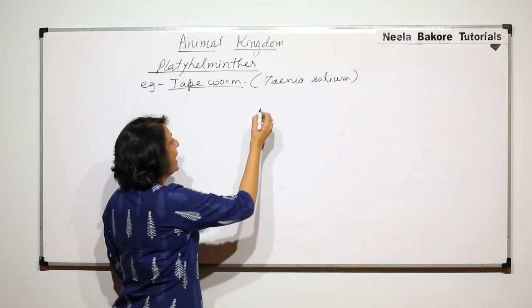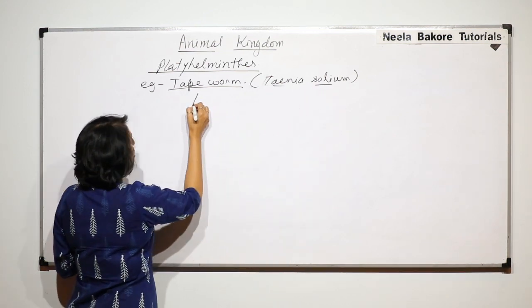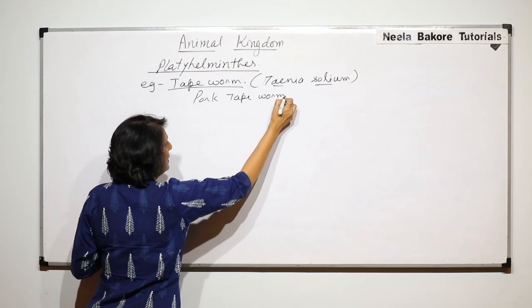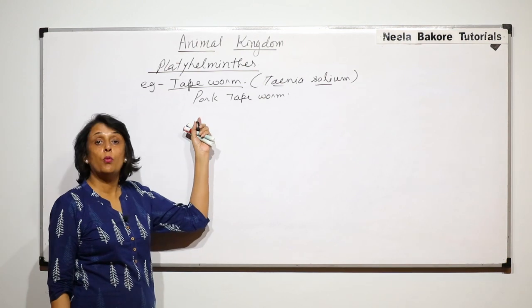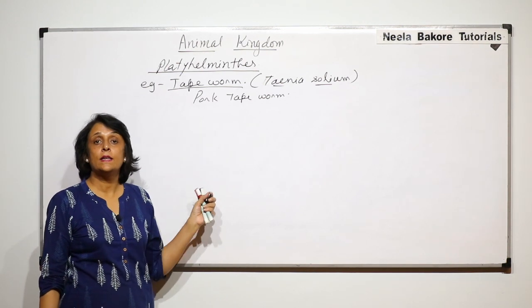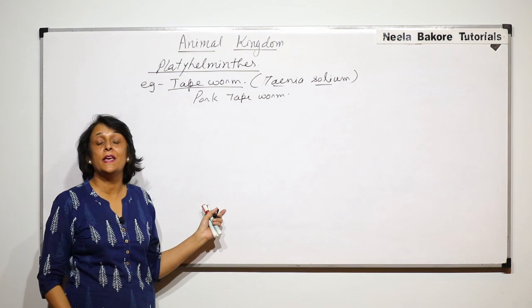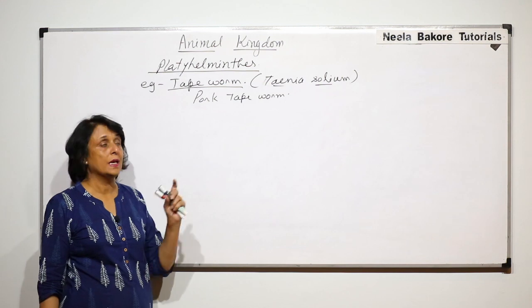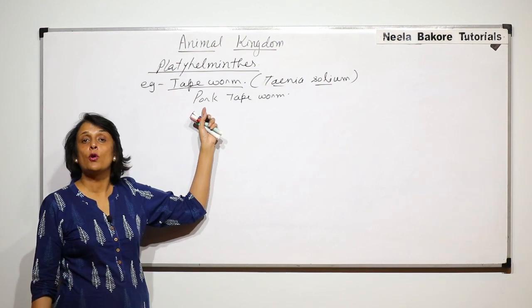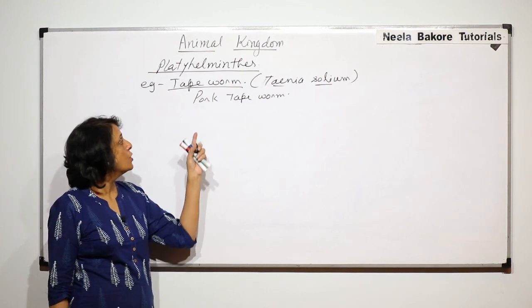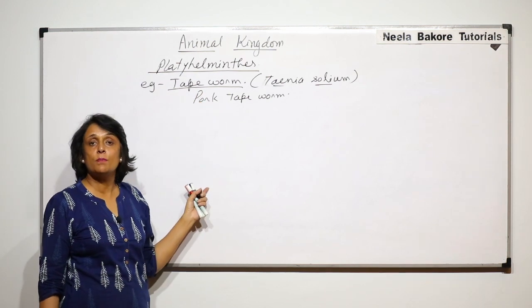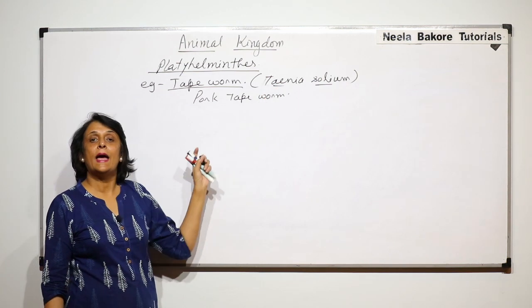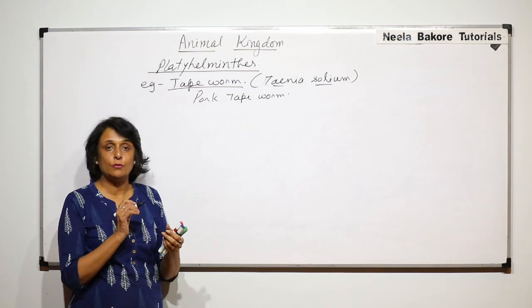It is also known as pork tapeworm and the reason why it is known as pork tapeworm is that it completes some stages of its life in the body of pig. In the pig it is present in the muscles, and that pork meat of pig is known as pork. So commonly known as tapeworm because the body is flat like measuring tape. This is the scientific name and is known as pork tapeworm.